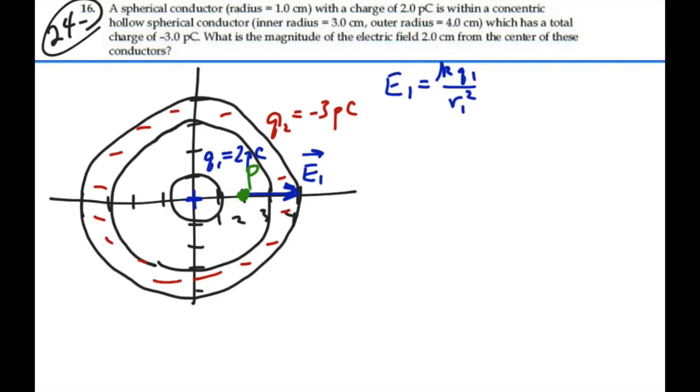For the shell, there is going to be no E field because we are inside the shell, and so by Gauss's law we would not enclose any charge of that shell. There would be no flux due to it, and hence there is no E field. So E2 is going to equal 0 because we are inside the shell. So we don't have to worry about the shell and we can forget about that.